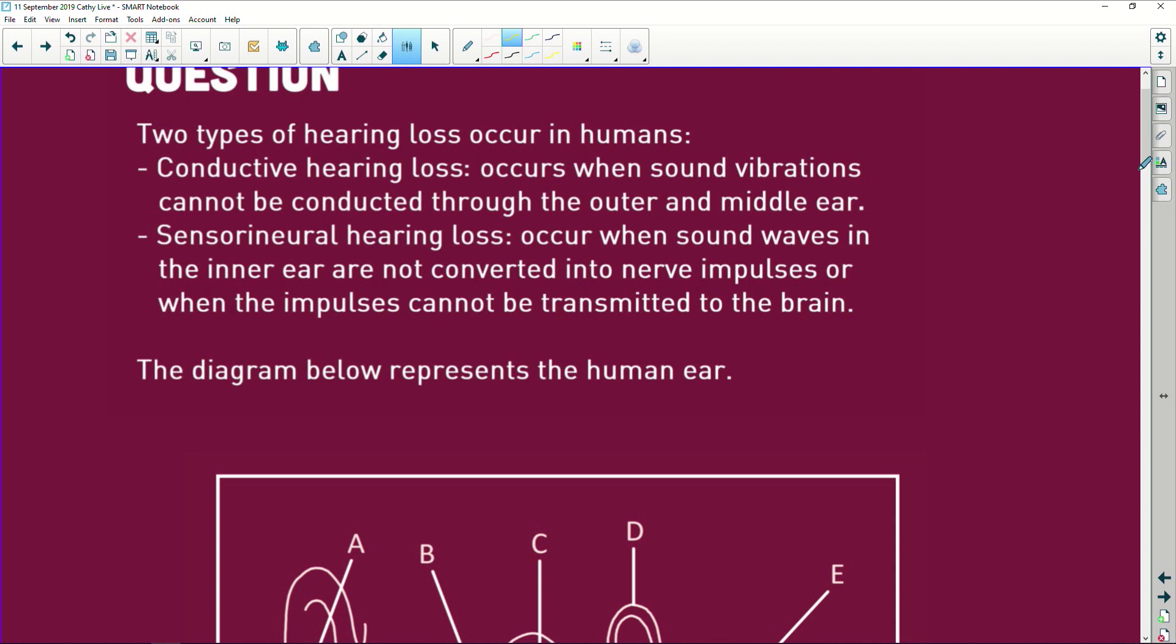All right, two types of hearing loss occur in humans. You get conductive hearing loss. That means that the sound vibrations can't be conducted through the outer and the middle ear. All right, and then you have sensory neural hearing loss. This is when the sound waves in the inner ear cannot be converted to an impulse. Or, remember the or, when the impulses cannot be transmitted to the brain.